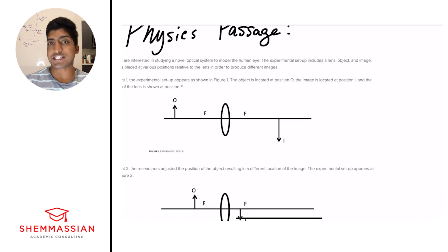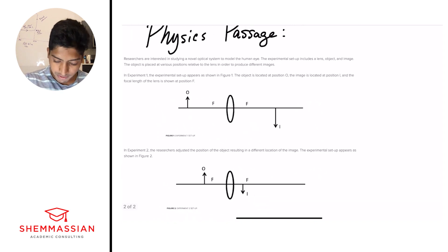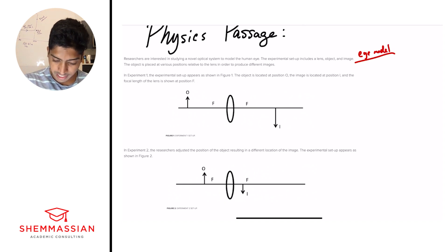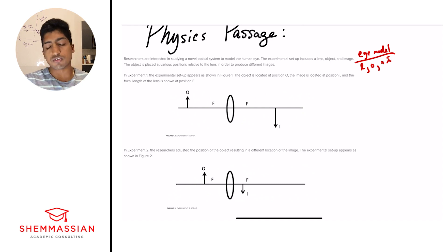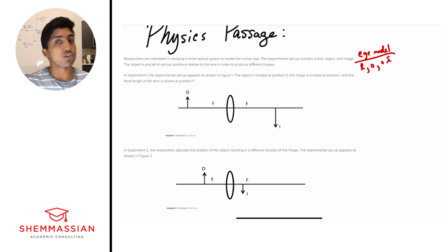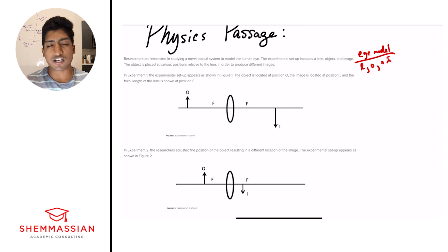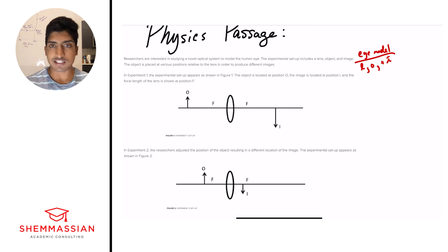The question I always ask myself is: what's happening? We're looking for a big picture understanding of what's being done. We have an eye model with a lens, object, and image — that's the quick summary of the paragraph. Remember, use abbreviations, use symbols, whatever you need to keep it simple. No one else is going to check your summary. So let's go on to the next paragraph.